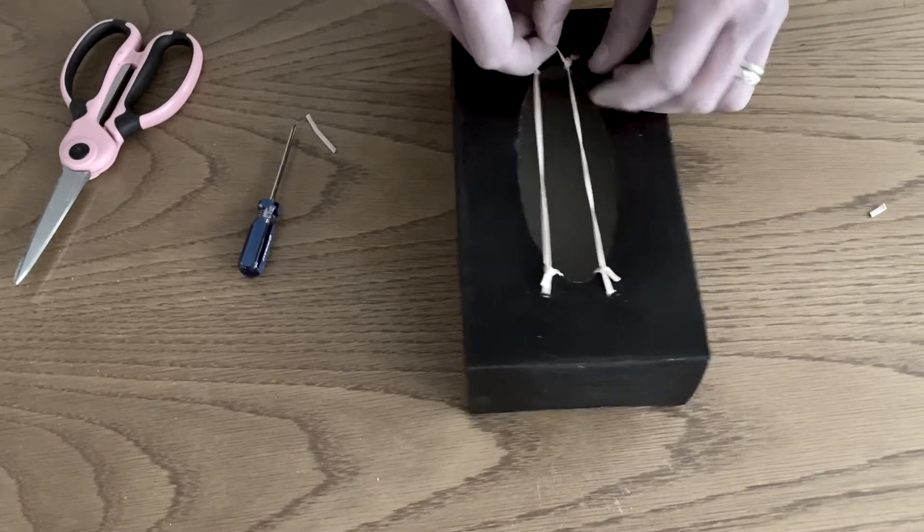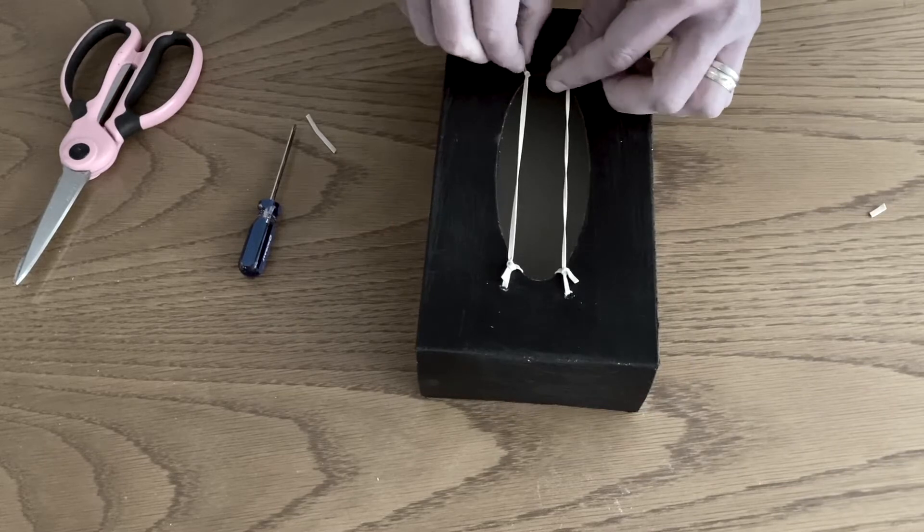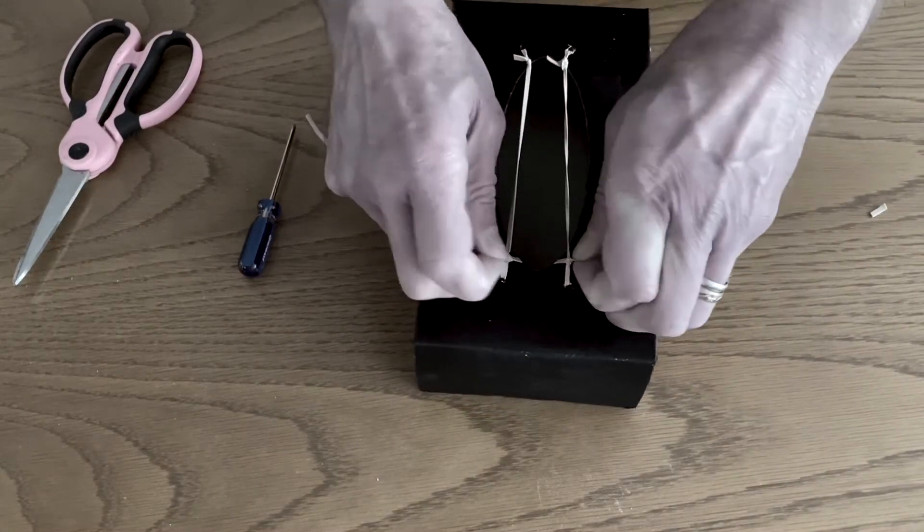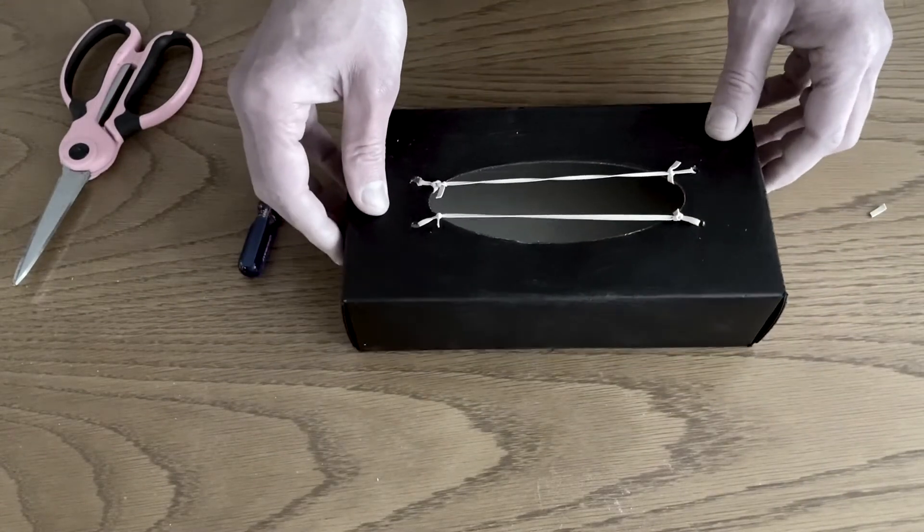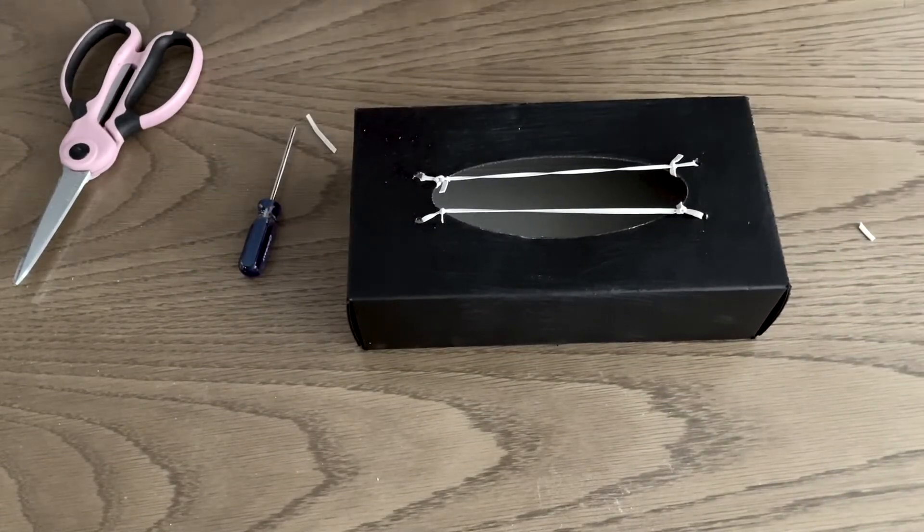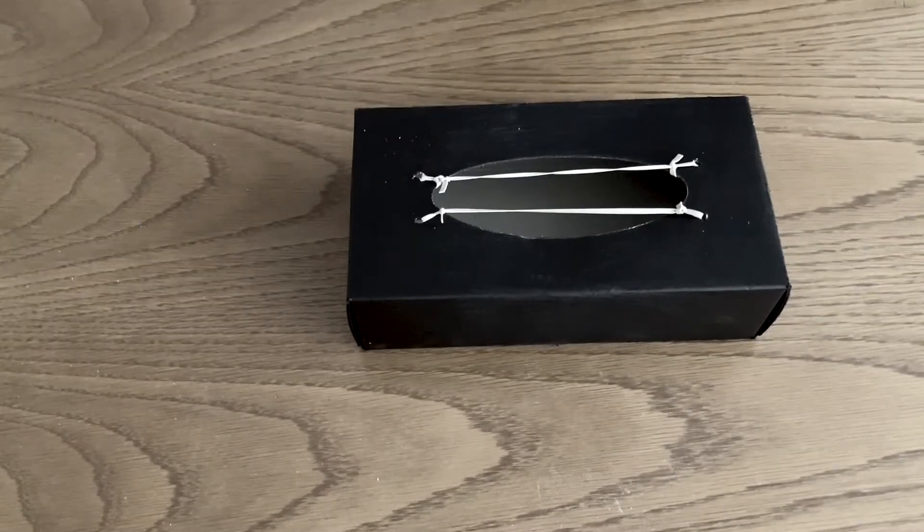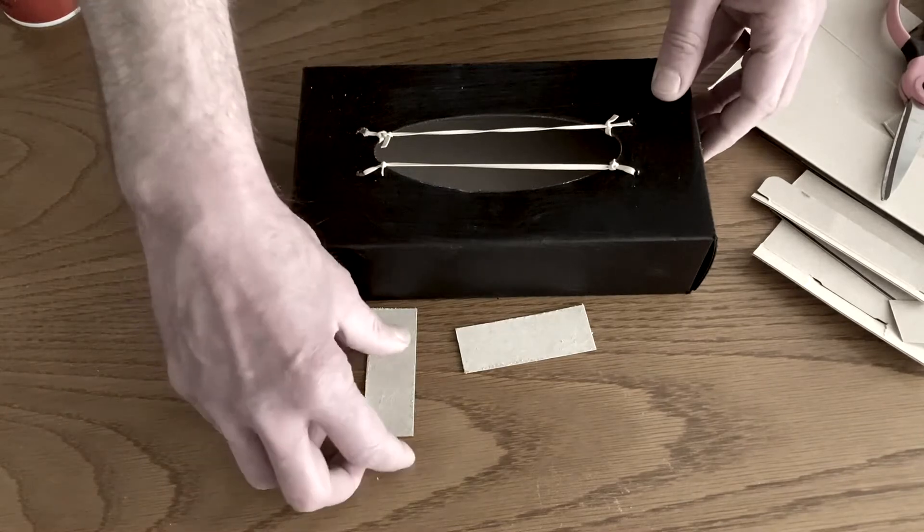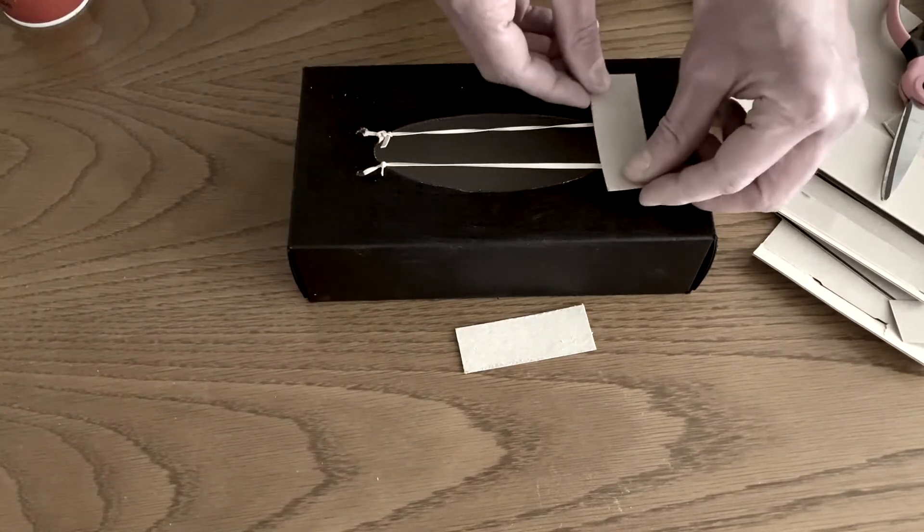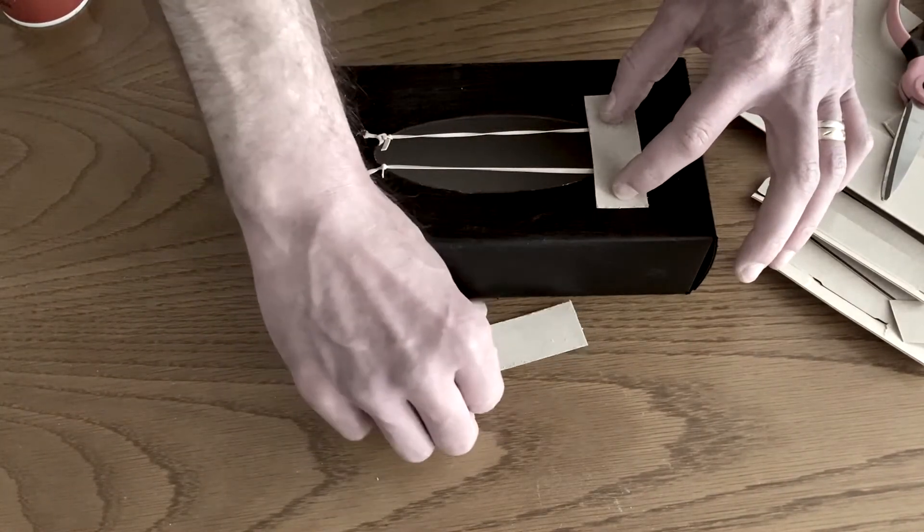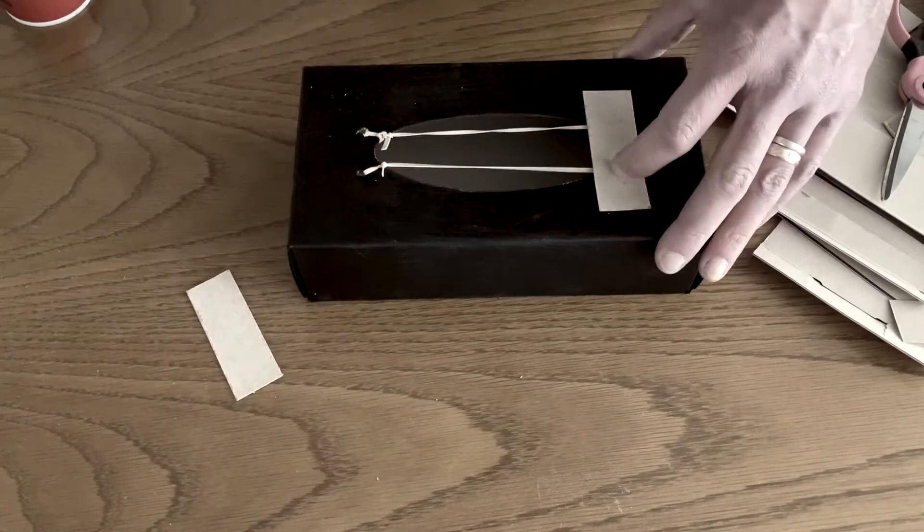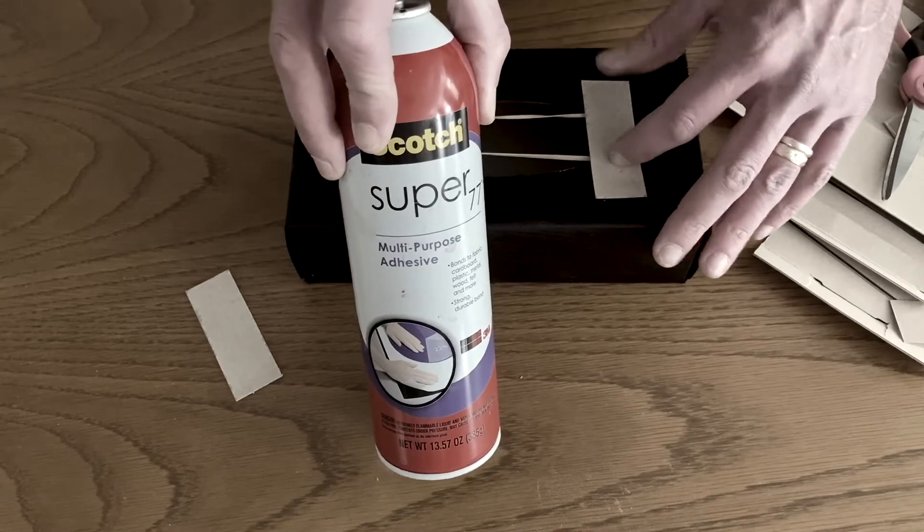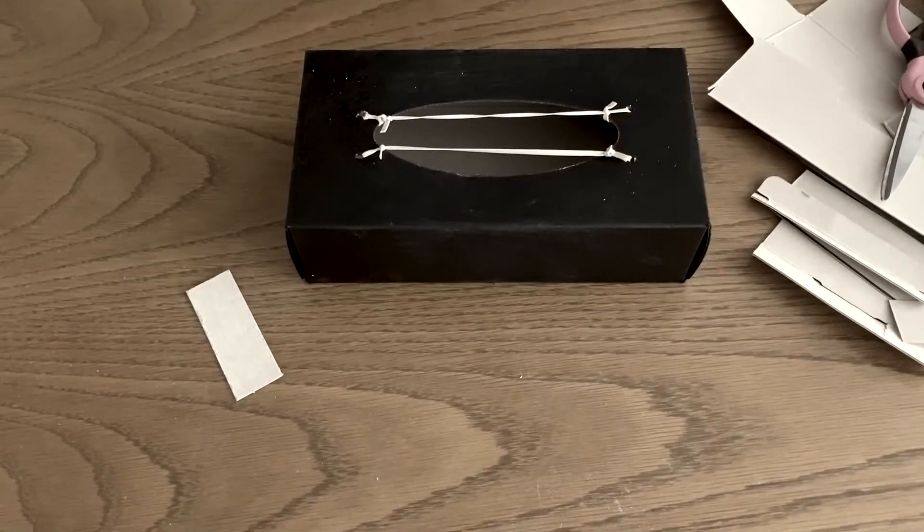Finish up by making sure all of the knots are secure. Now that your basic rubber band guitar is finished, it's time to make it look like a guitar. However you want to do this is up to you.